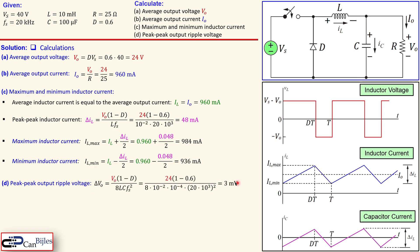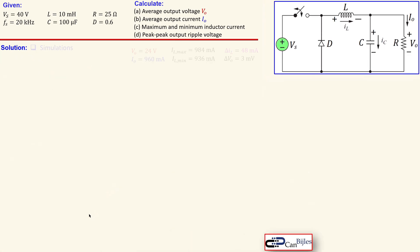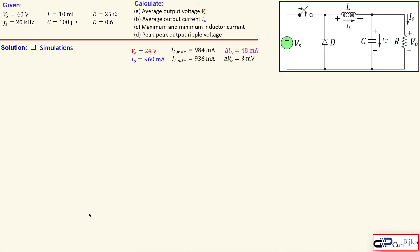The peak-to-peak output ripple voltage is given by this expression and that will be 3 millivolts. You see here that it is dependent on the value of the capacitor, inductor, switching frequency, duty cycle, and output voltage. Let's now collect everything we have calculated and look at the simulations.